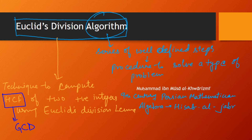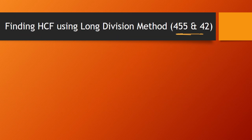Before we try to understand how to use this algorithm or how to find HCF using Euclid's Division Algorithm, let's go back to middle school where we were taught how to find HCF of two numbers using the long division method. I am going to use the long division method to find HCF of 455 and 42.